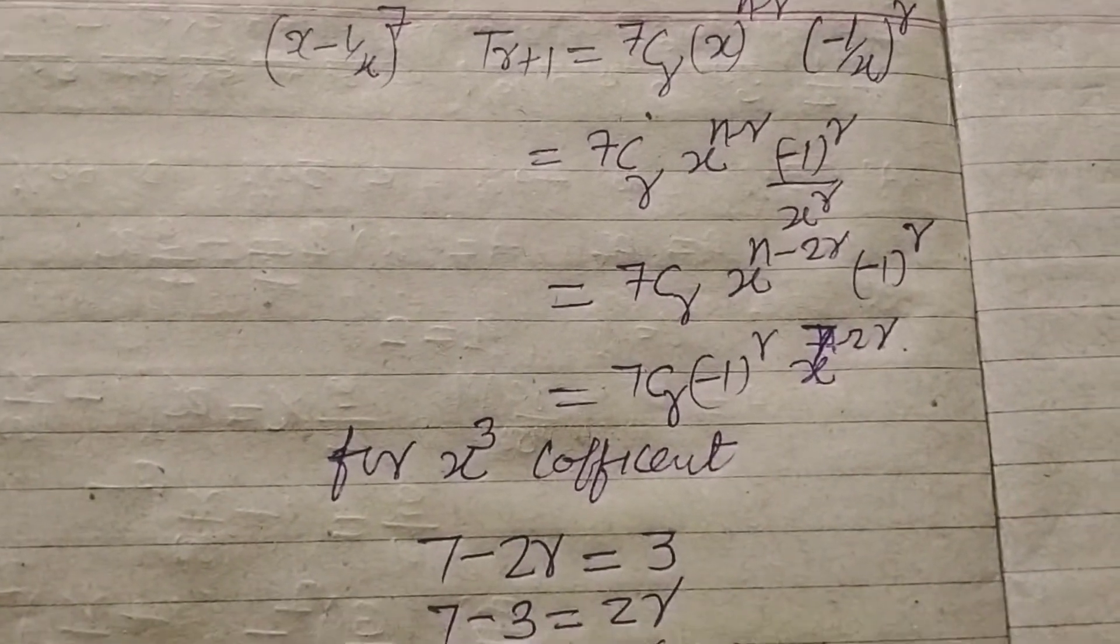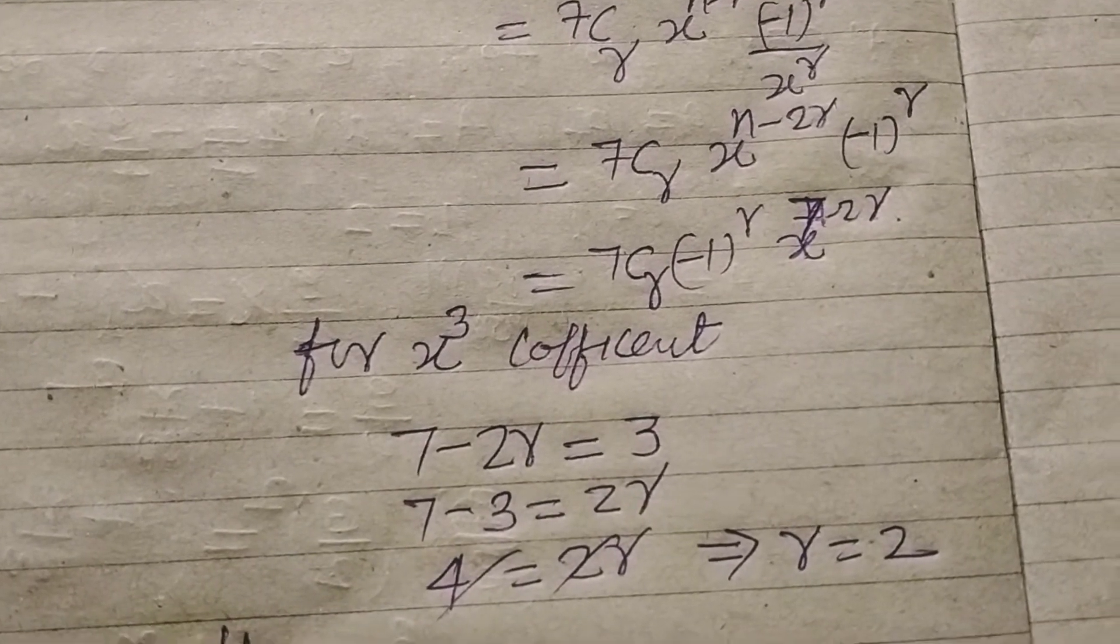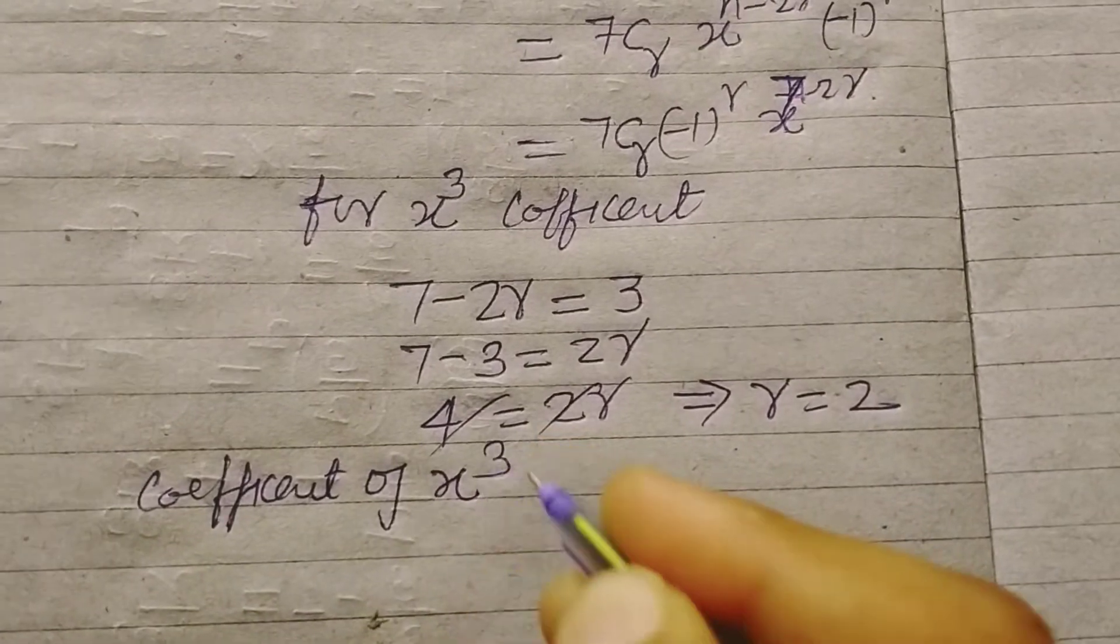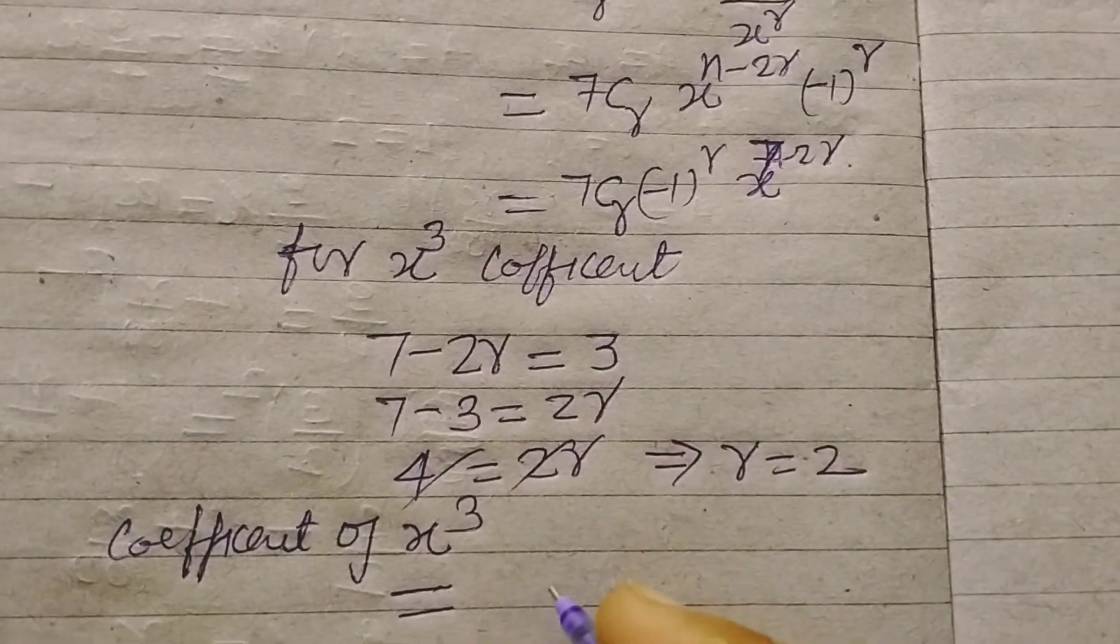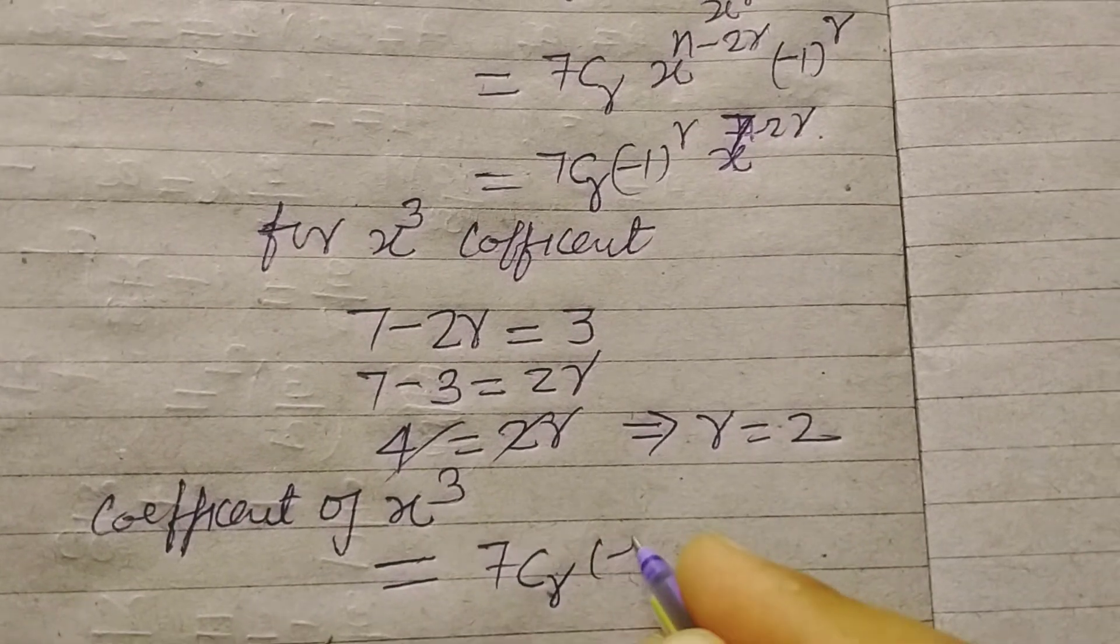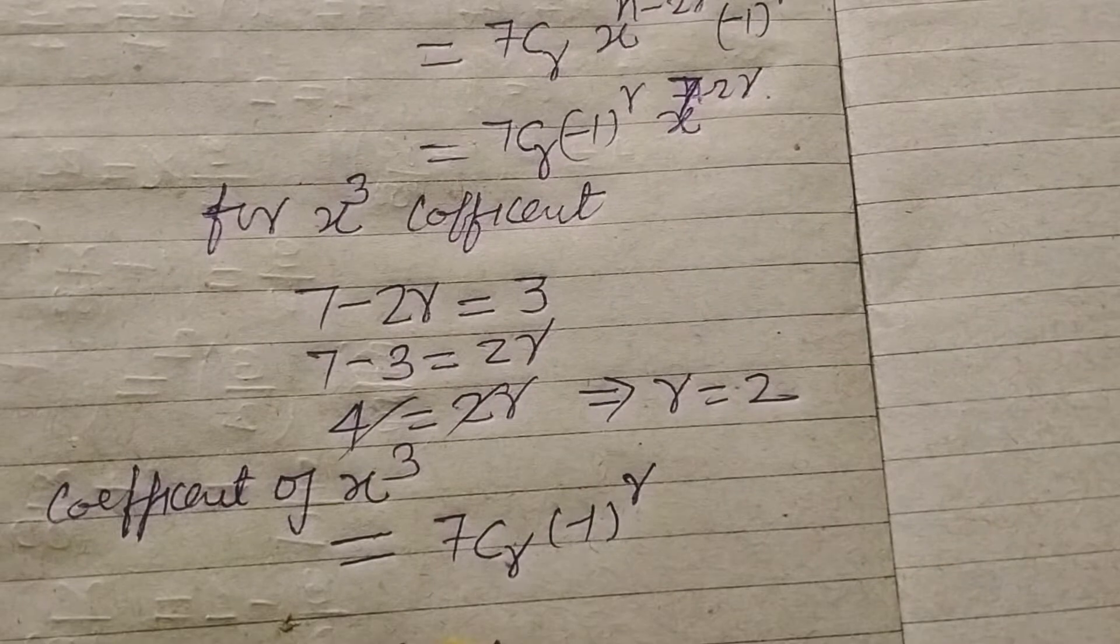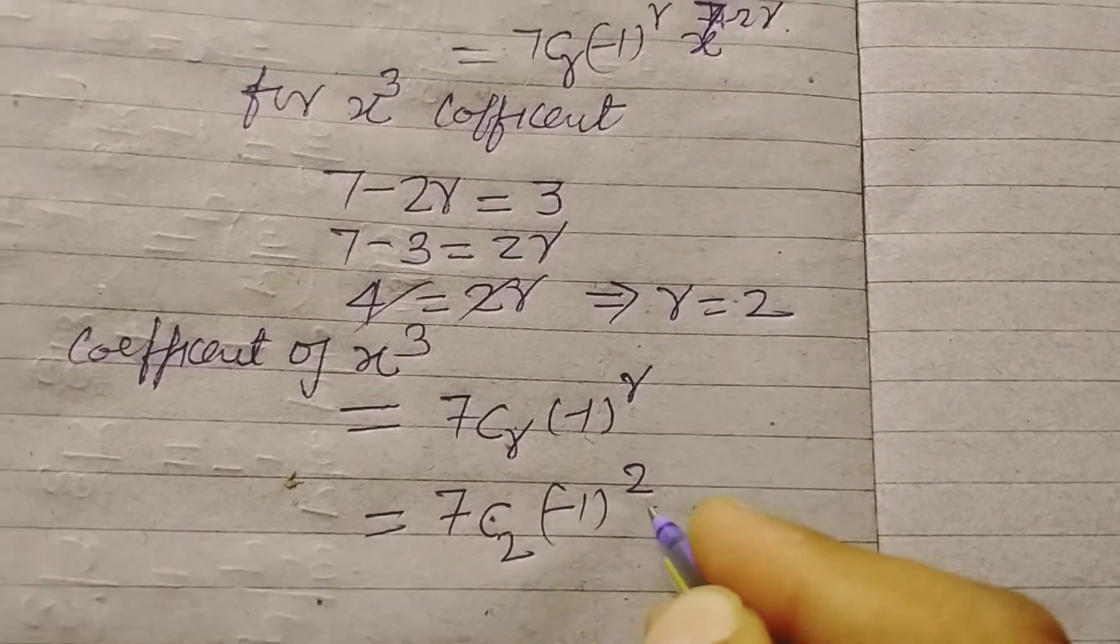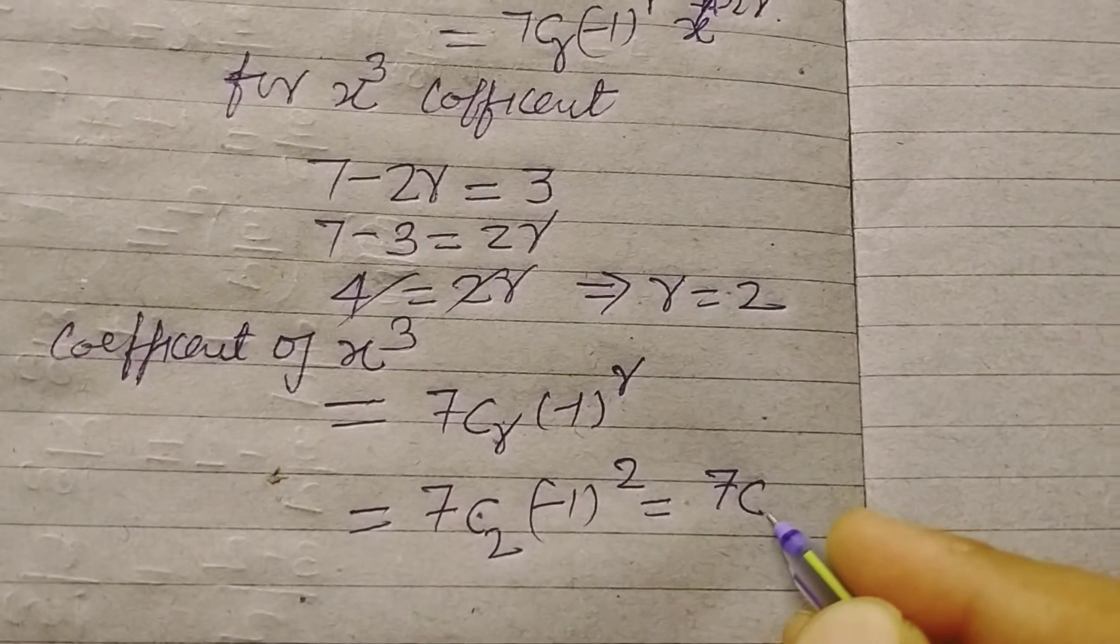Now we can find the coefficient of x to the power 3 equal to 7Cr times minus 1 to the power r. We put the value 7C2 times minus 1 to the power 2. So this is 7C2.